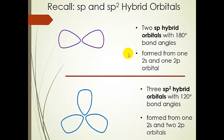Now let's look at sp2 and remind ourselves. SP2 hybrids are formed when we take the 2s and two of the 2p atomic orbitals and mix those, and then we end up with three sp2 hybrid orbitals. The bond angles between them are 120 degrees.